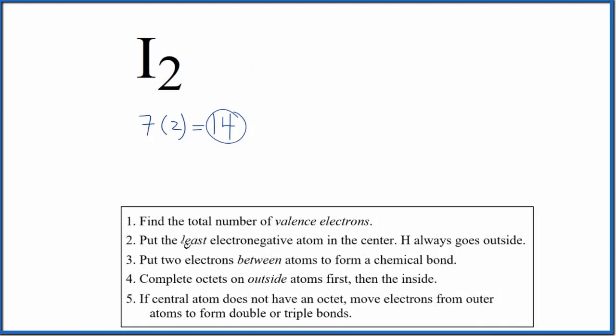Since we only have two atoms, we can't really put the least electronegative atom in the center. There isn't a center. So let's just draw two iodine atoms, and then we'll put a pair of electrons between atoms, and that's going to form the chemical bond between the two iodine atoms. So we put two there.